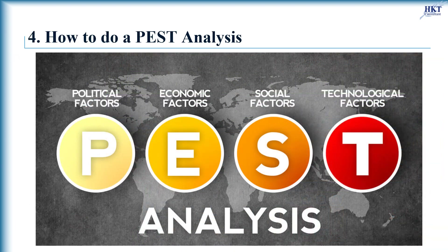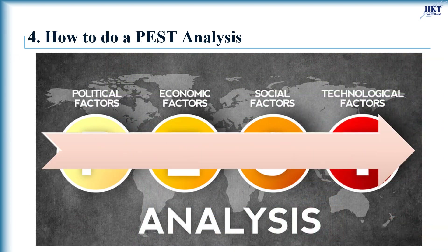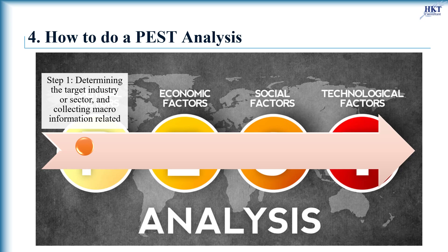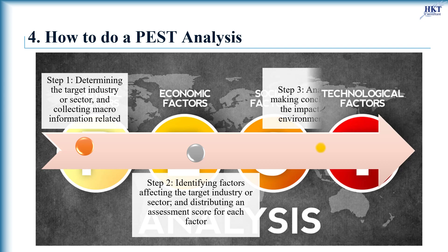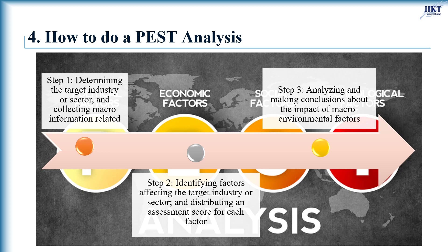To do a PEST analysis, we use mainly secondary data through three basic steps. The first consists of determining the target industry or sector and collecting related macro information. In the second step, we identify factors affecting the target industry or sector and distribute an assessment score for each factor. Finally, we analyze and make conclusions about the impact of macro-environmental factors.